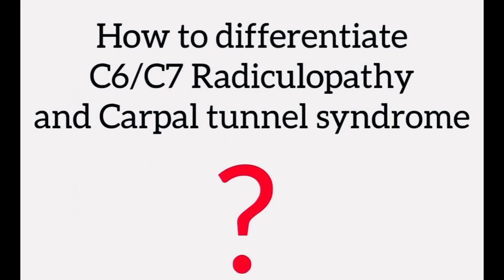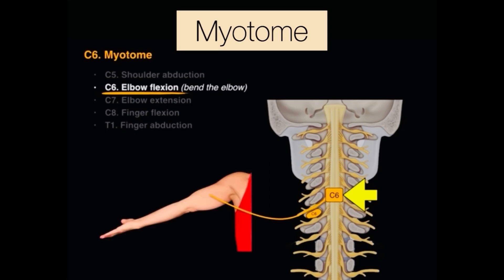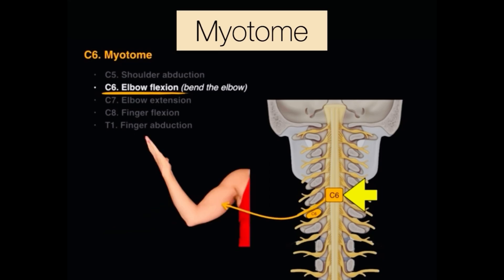Since these two conditions show the same pain distribution or dermatomal pattern, to differentiate them we should check the myotome — the motor function of the muscles. C6 mainly supplies the biceps, which means bending the elbow, so we can check the elbow flexion action to assess C6 nerve root innervation.